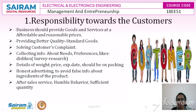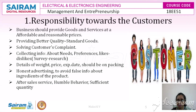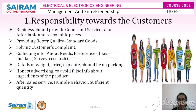Details of weight, price, and expiry date should be clearly shown on packaging. Whenever buying a product, customers check the packing date, expiry date, warranty period, and quantity inside. Honest advertising is also essential — celebrities should follow a code of conduct where they must actually use a product before advertising it. This avoids false information about products and their ingredients.